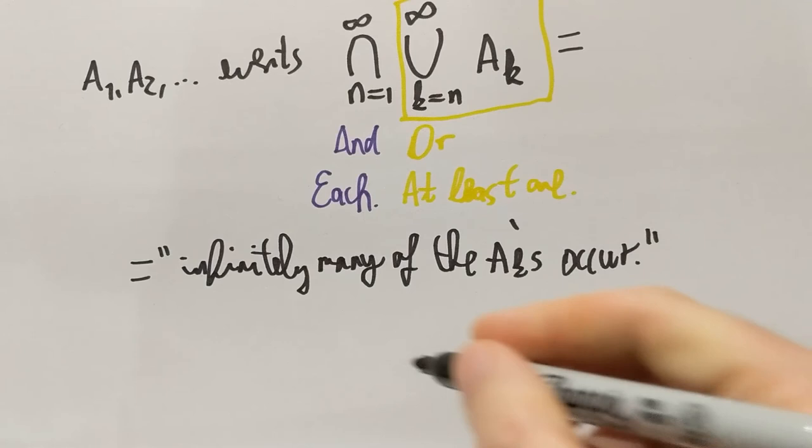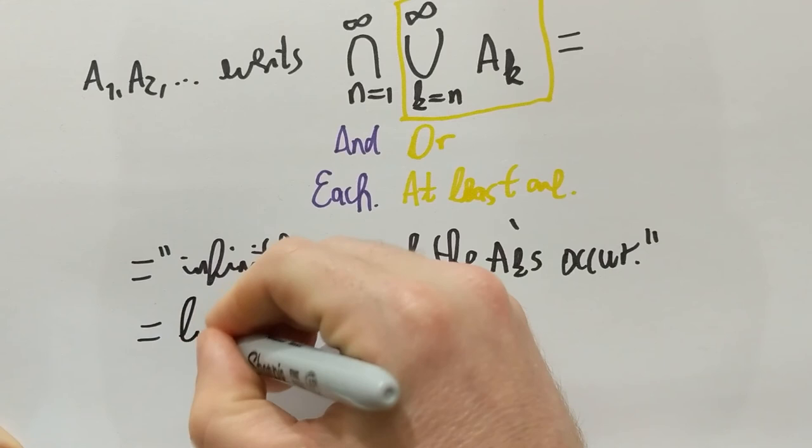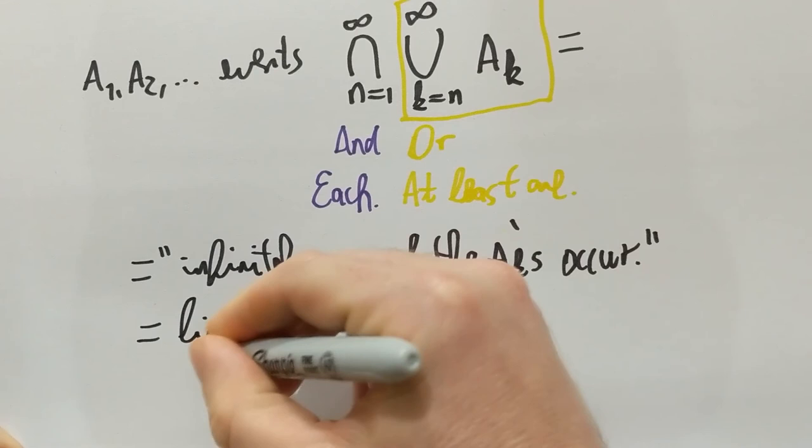And now it's probably reasonable to call these events the limsup of the AKs, which some people call it, because it's a little bit similar to the limsup of functions, except it's in terms of events. So infinitely many of the AKs occurring, that's the limsup of the events AK.